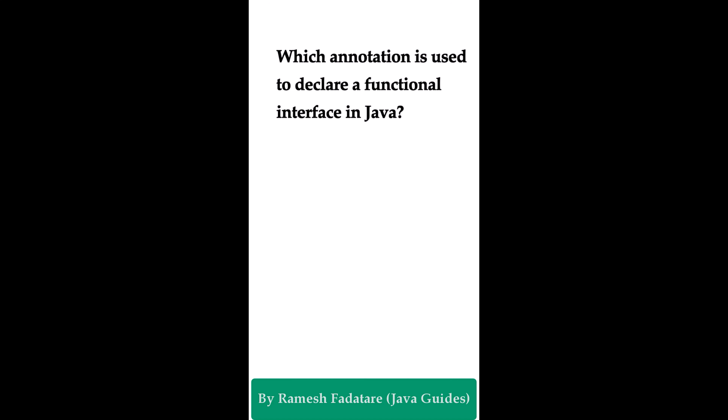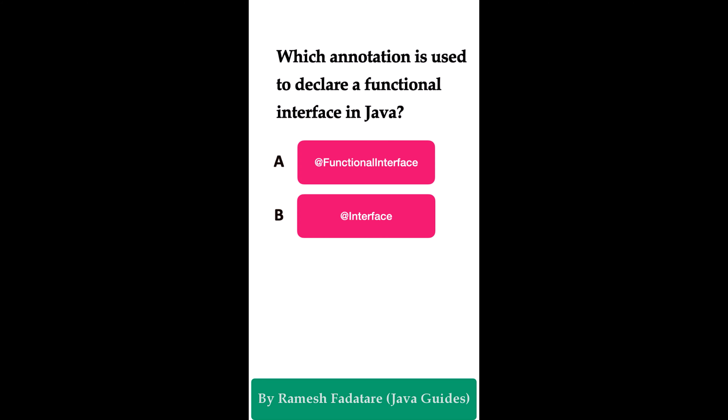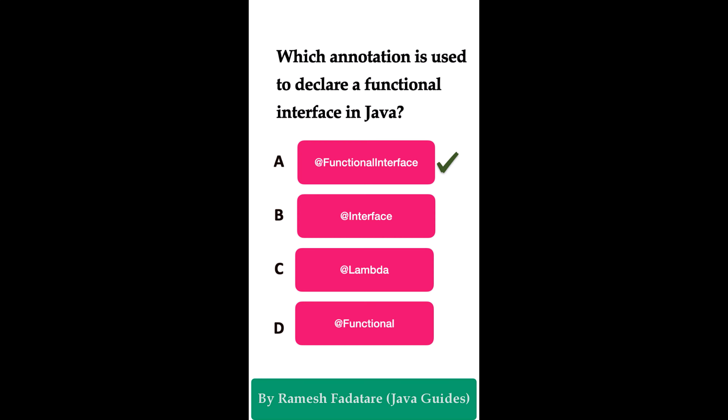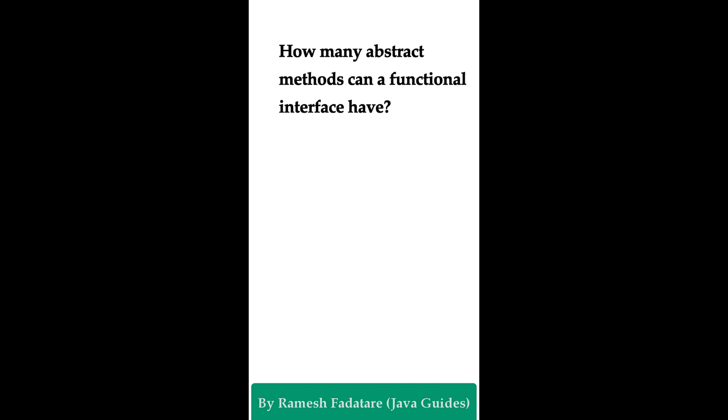Which annotation is used to declare a functional interface in Java? Option A: @FunctionalInterface. Option B: @Interface. Option C: @Lambda. Option D: @Functional. The correct answer is @FunctionalInterface. This annotation is used to declare a functional interface in Java 8. A functional interface must have a single abstract method. When creating a functional interface, annotate it with @FunctionalInterface, ensure it has only one abstract method, and use a lambda expression to implement it.